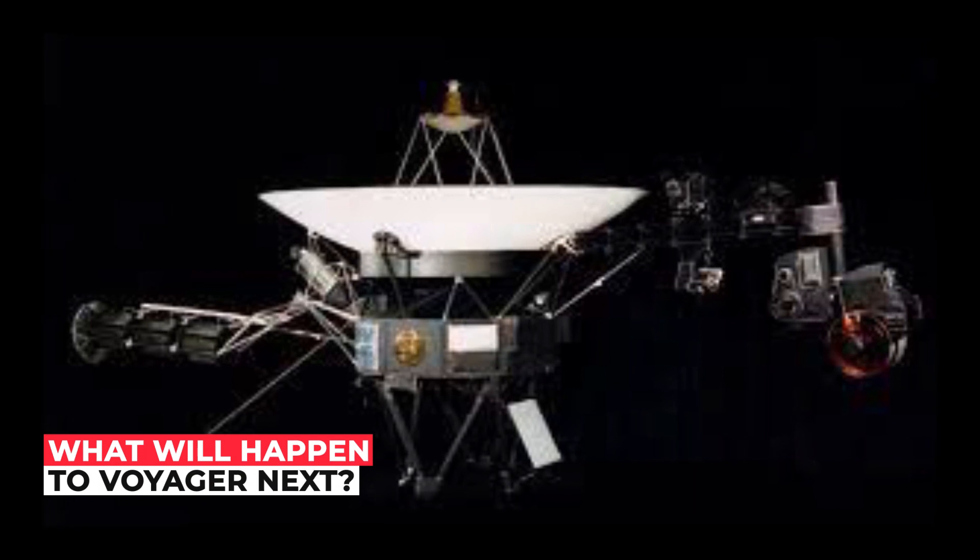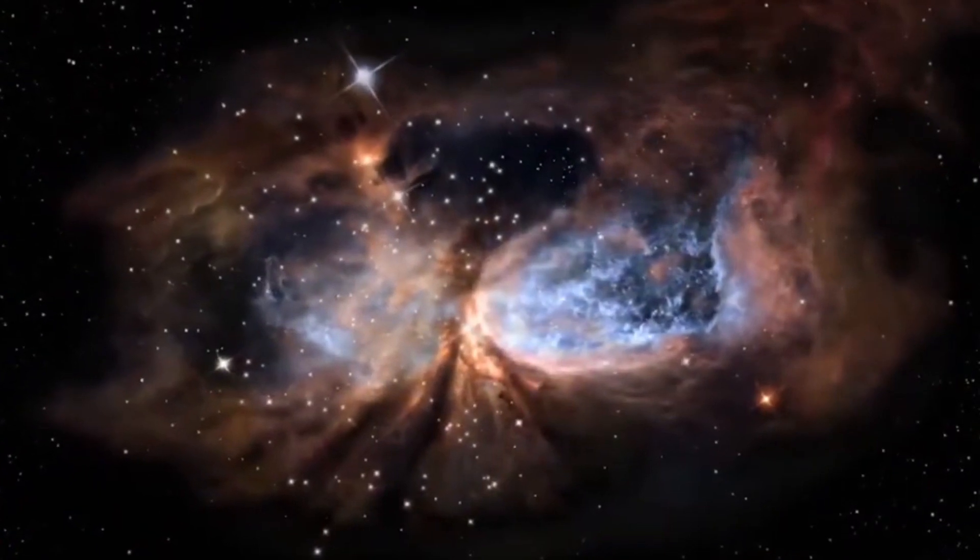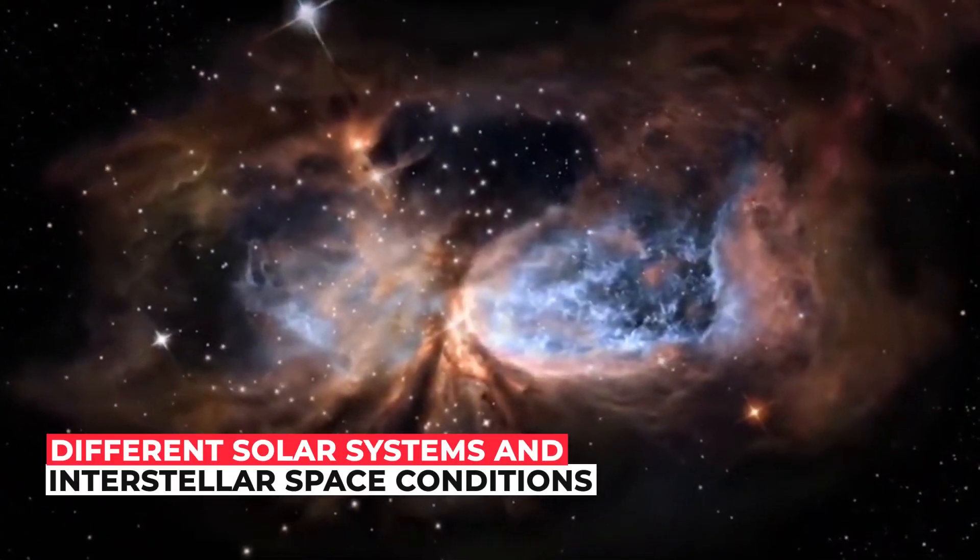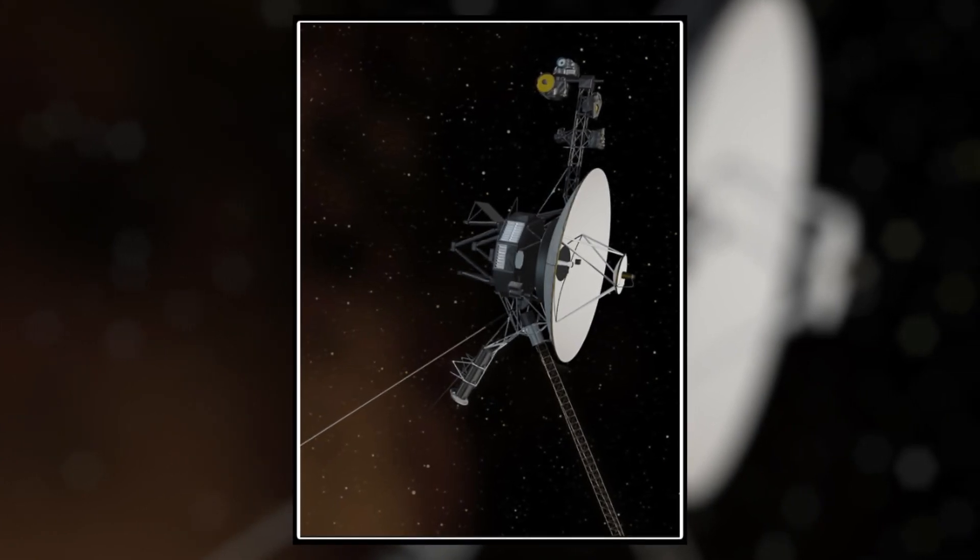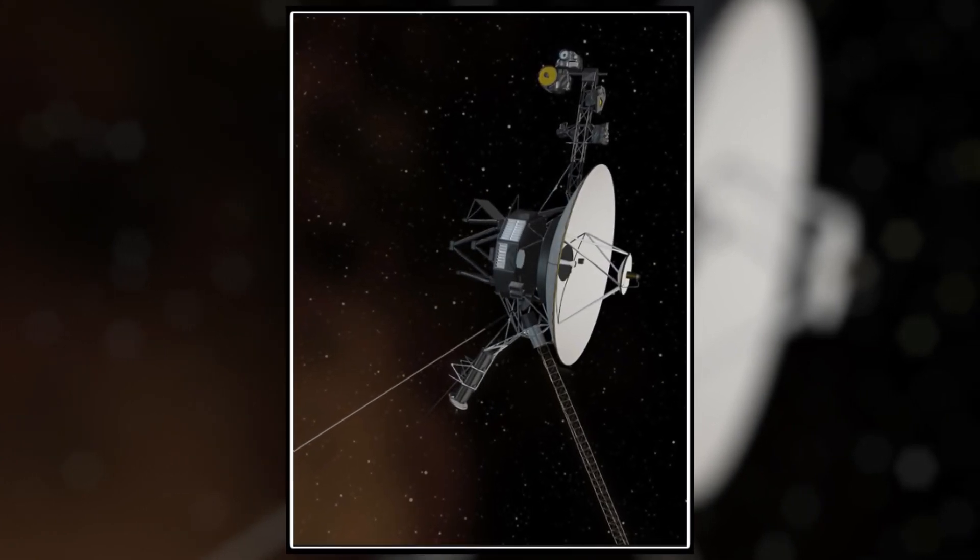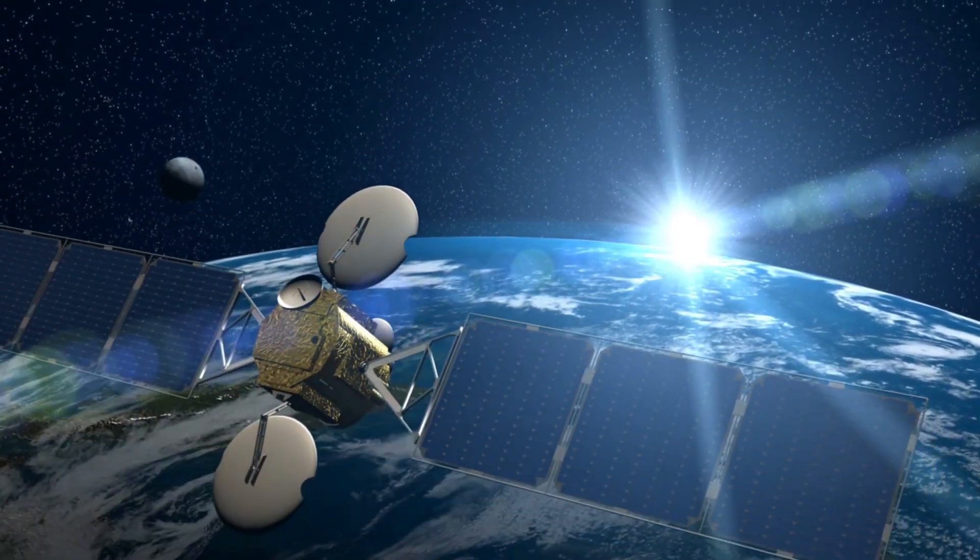What will happen to Voyager next? Both spacecraft are still transmitting data to Earth. This information will aid our understanding of different solar systems and interstellar space conditions. The Voyagers have enough power and fuel to last until at least 2025. They will be unable to communicate with Earth for some time after this.